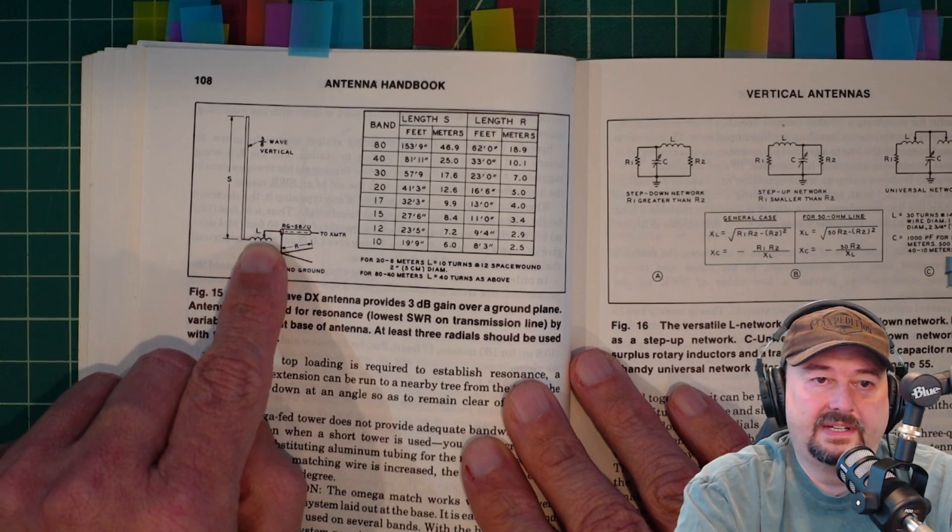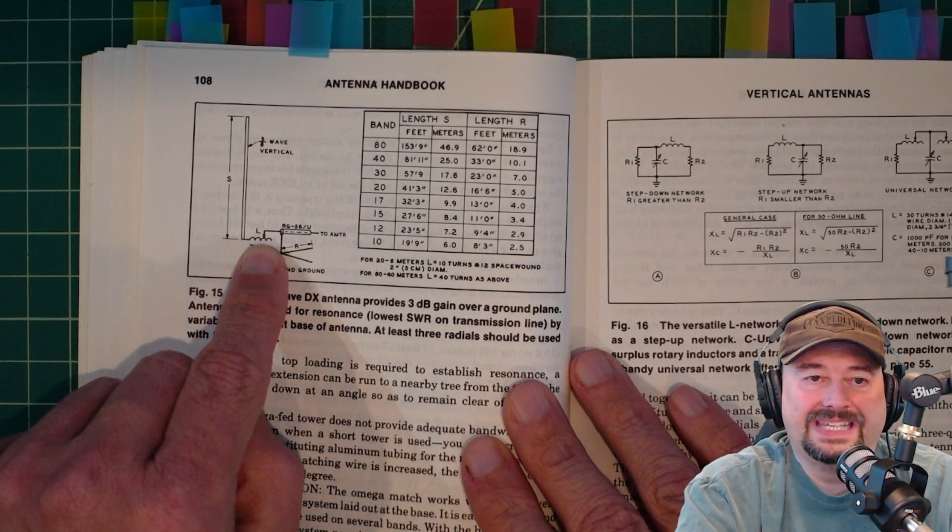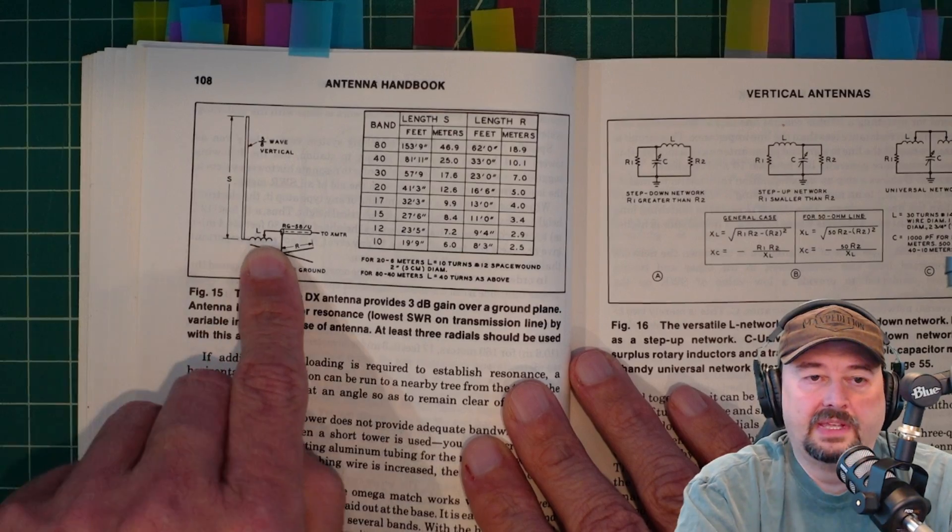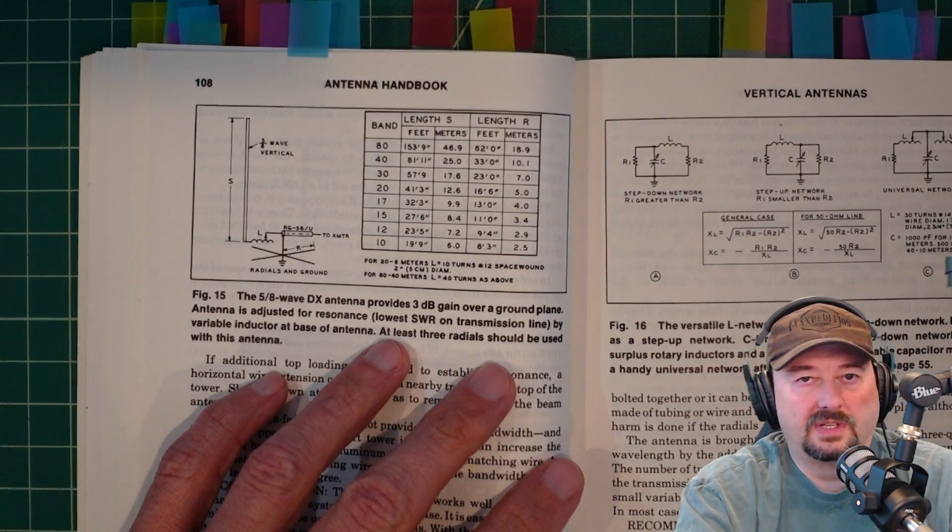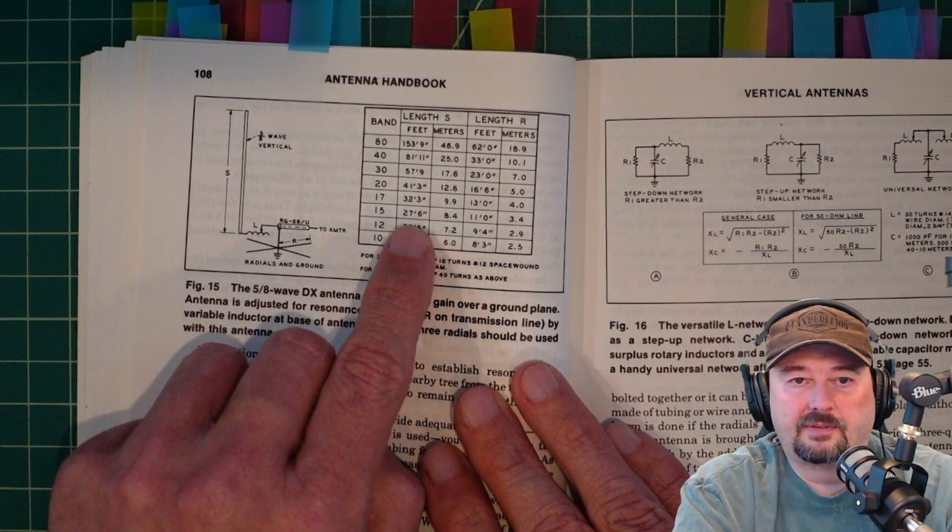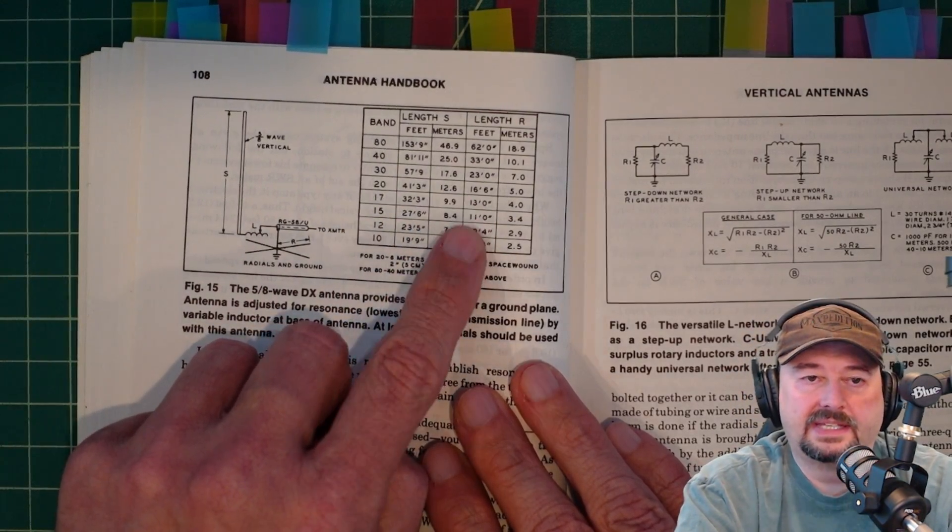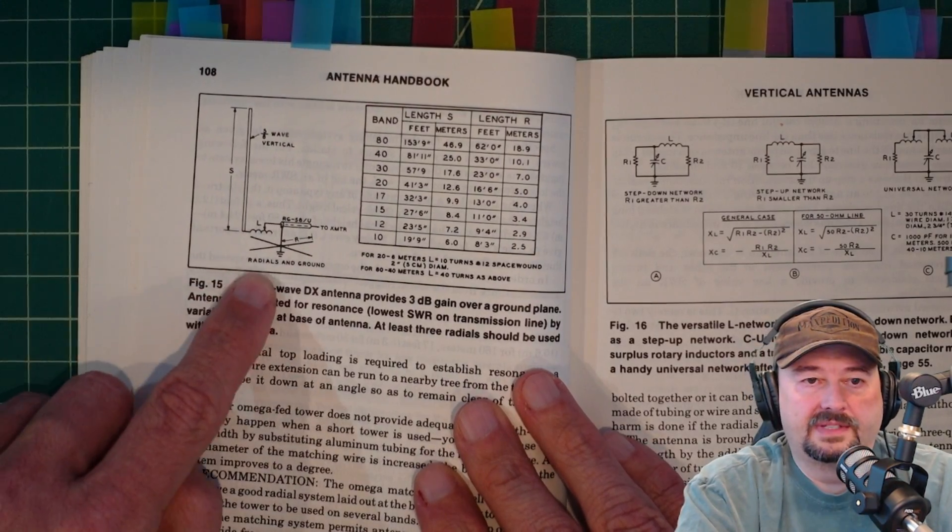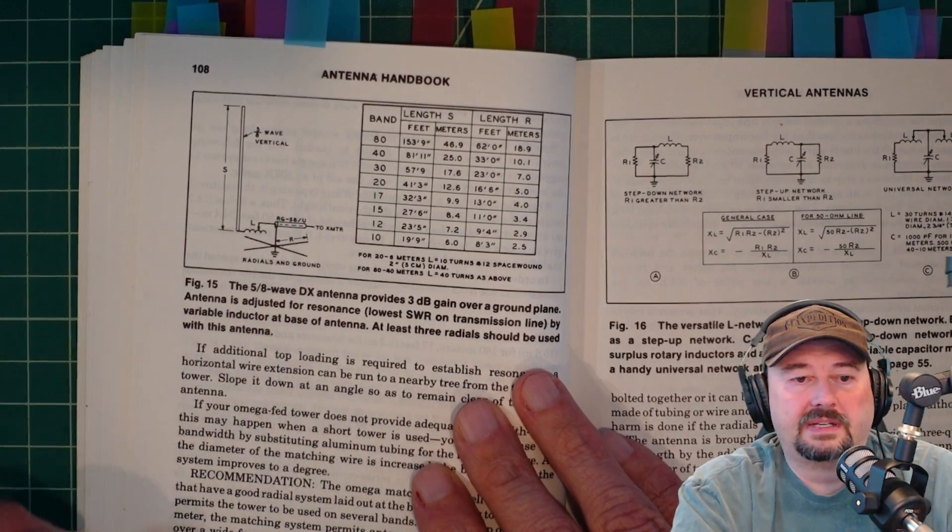Now, on this one, what they do have, you can see right here, is an adjustable inductor at the bottom of the antenna. We use an inductor to make an antenna look electrically longer than it really is, but he goes through the ground plane, and he talks about the different bands and what size antenna that you want. But the idea here, this adjustable inductor, is pretty interesting.